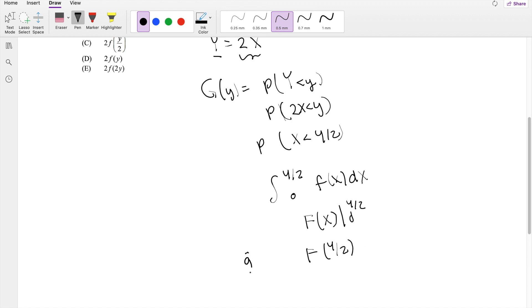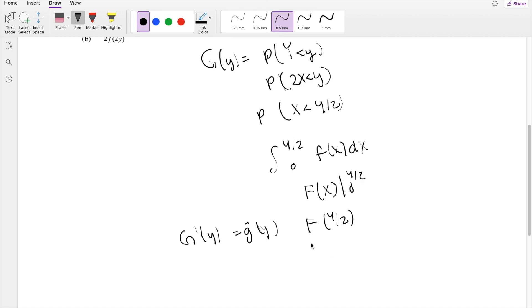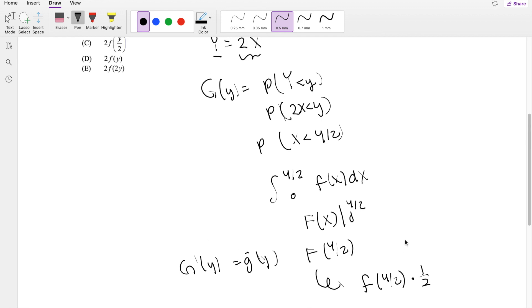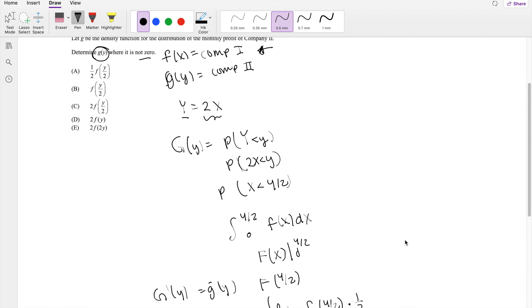Which is exactly just the derivative of big G of Y. So we just have to take the derivative. So the derivative of this is going to be little f of Y over 2 times the chain rule here, which will just be half. So then this is going to be our answer A.